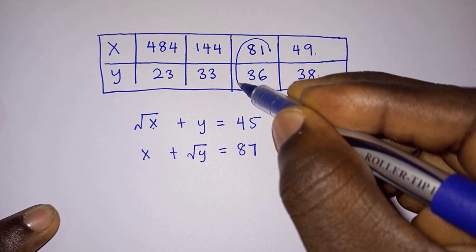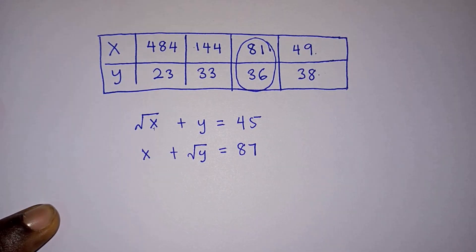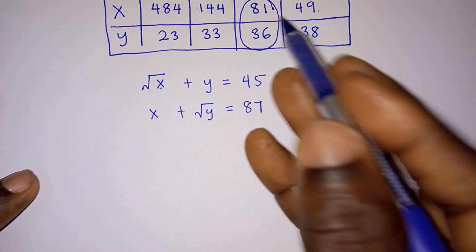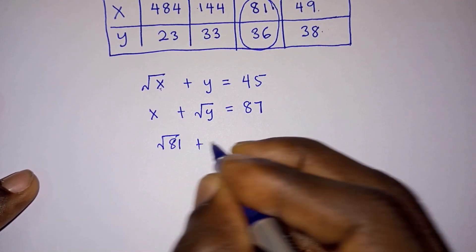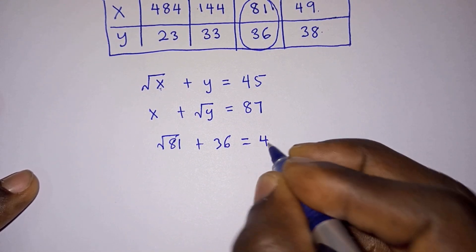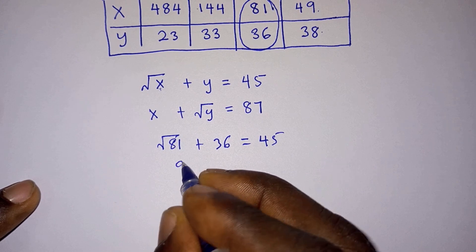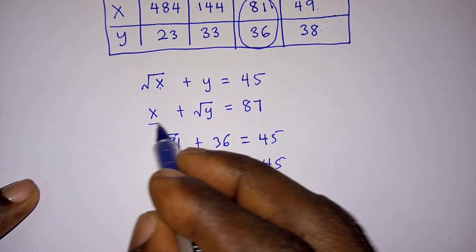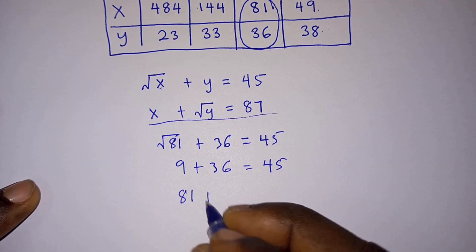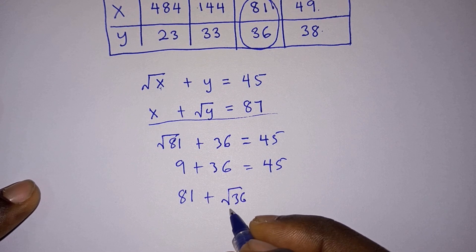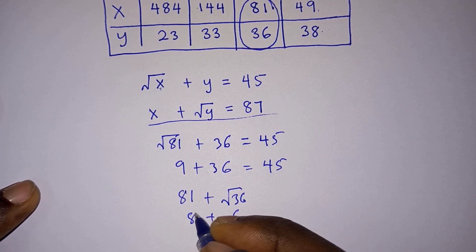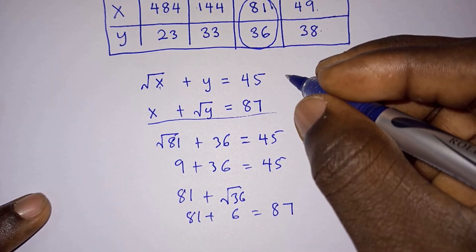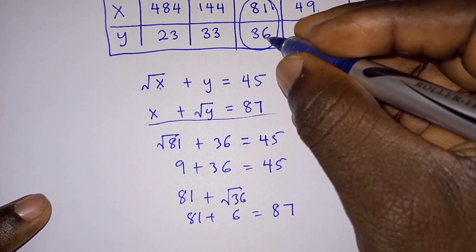So the only valid solution is x = 81 and y = 36. Let's verify: √81 + 36 = 9 + 36 = 45. Correct! And for the second equation: 81 + √36 = 81 + 6 = 87. Correct! So the only values of x and y that satisfy the system are x = 81 and y = 36.